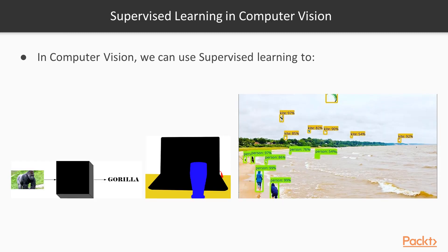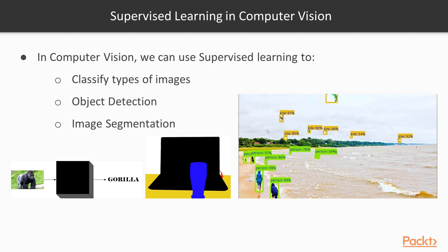Now let's look at some supervised learning examples in computer vision. With supervised learning we can classify types of images — things like identifying whether an image has a cat or dog, or whether an image is inappropriate. You can do things like object detection, figuring out different objects in the scene. And image segmentation, which is separating different layers of an image — identifying this as a laptop, this as a cup in the foreground, this as a wire connecting the laptop, and this as the desk.